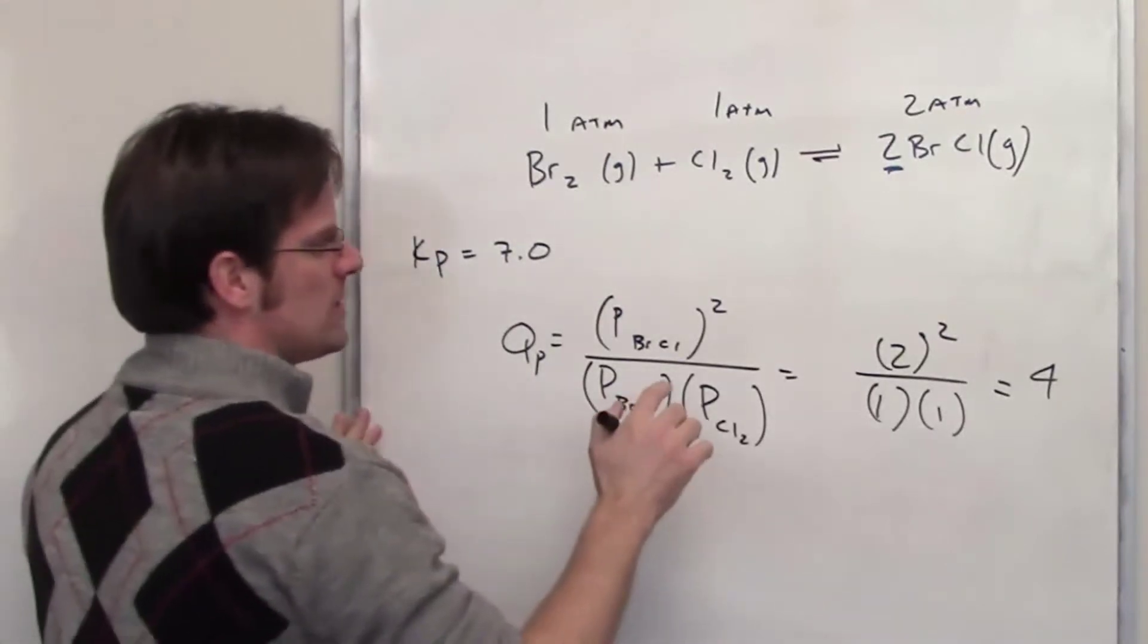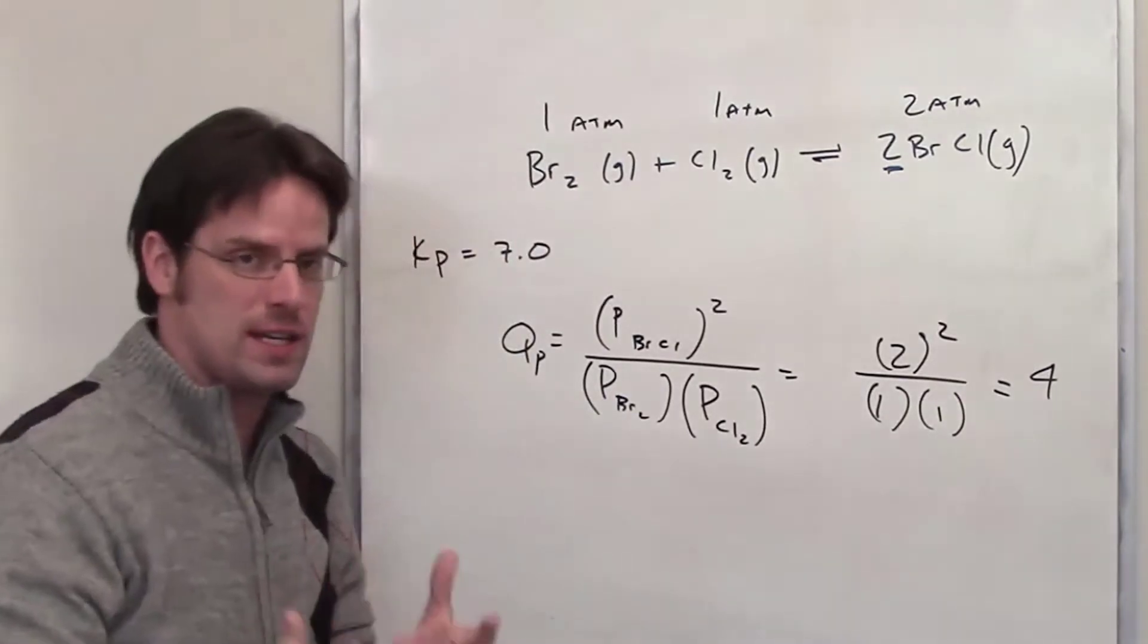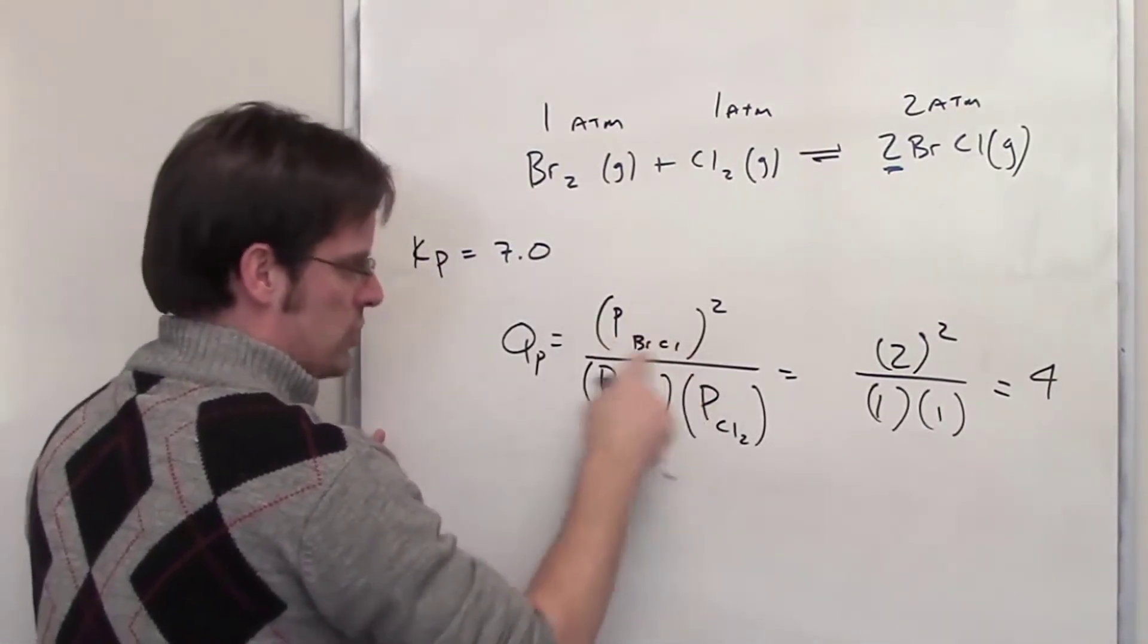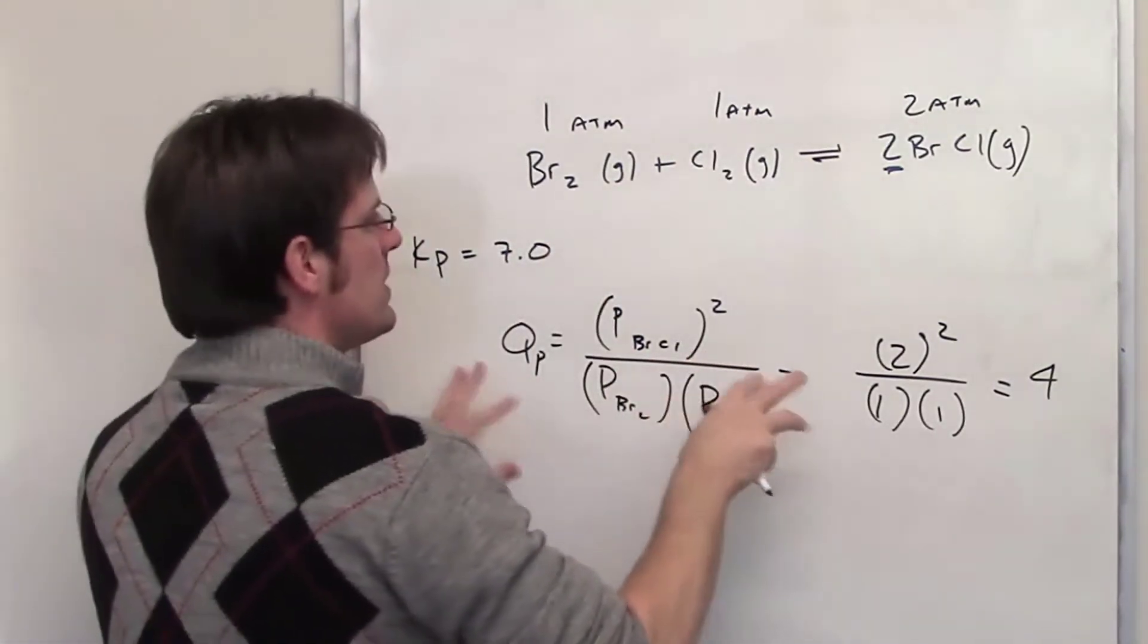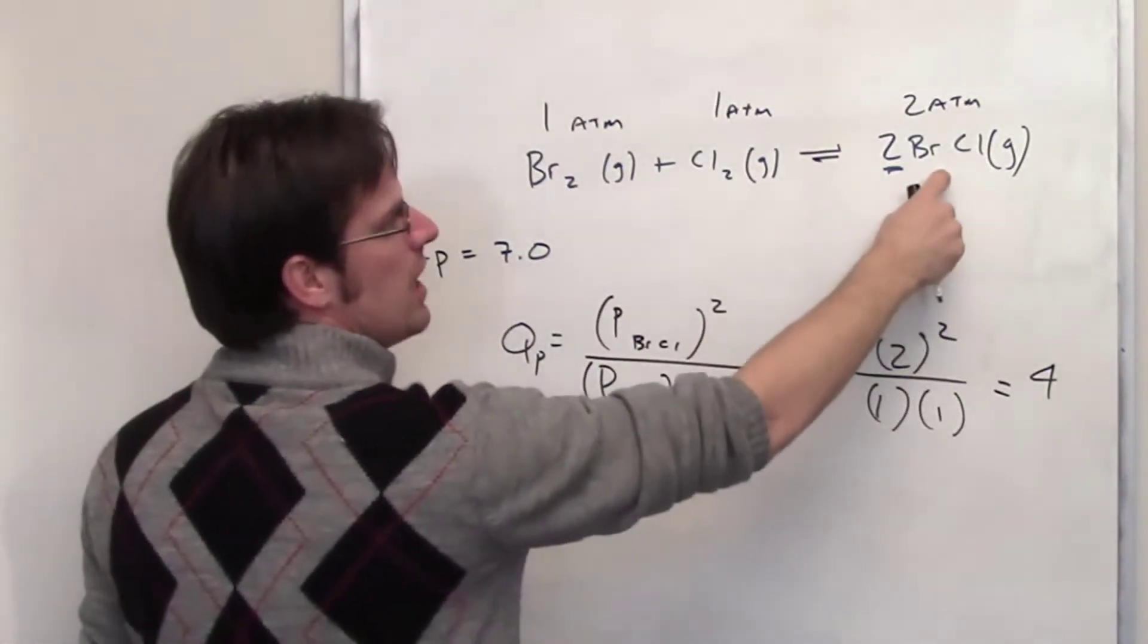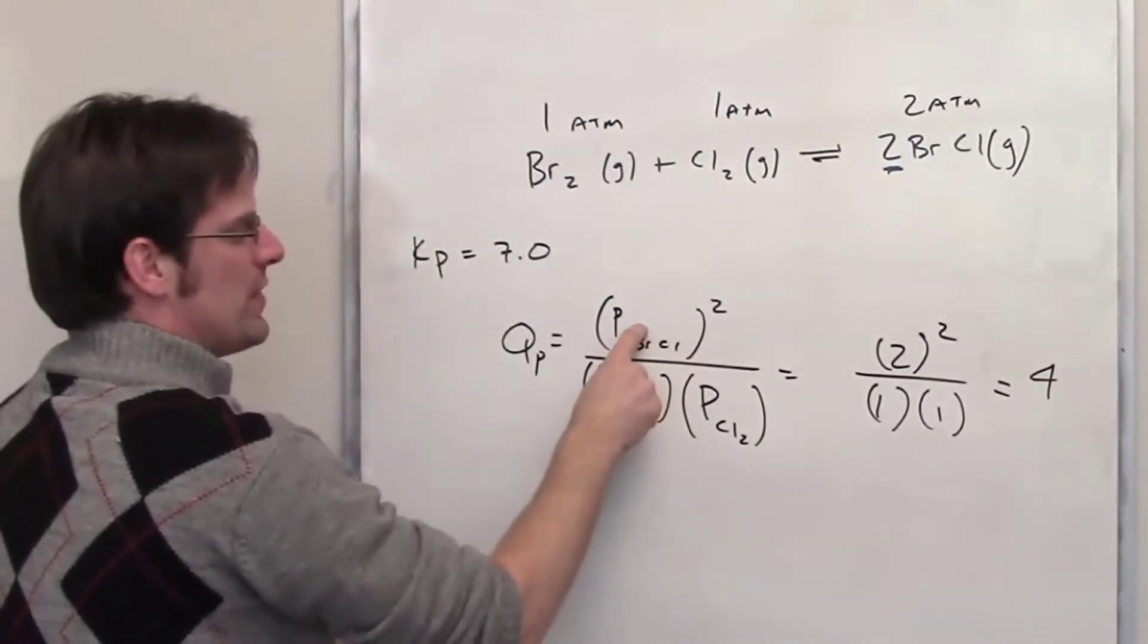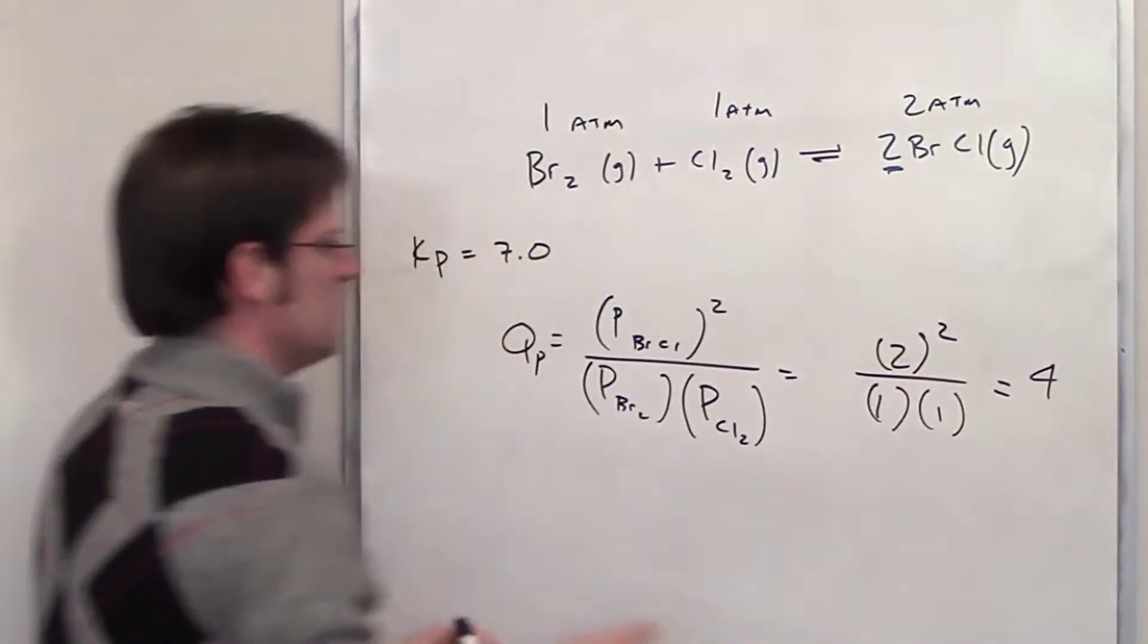Well as we look at this mathematically you can see that Q is smaller than K. In order to have Q become equal to K we're going to have to have the numerator which is this bromine chloride pressure go up. That means that right now at initiation this reaction is imbalanced because there's not enough product. So this reaction is going to have to drift to the right to create more product, increase the pressure of this, increasing the numerator and eventually getting the final mathematical calculation to come out to be seven.